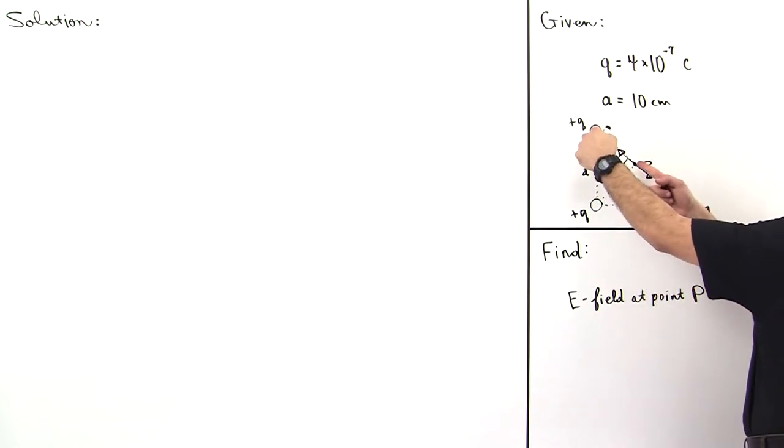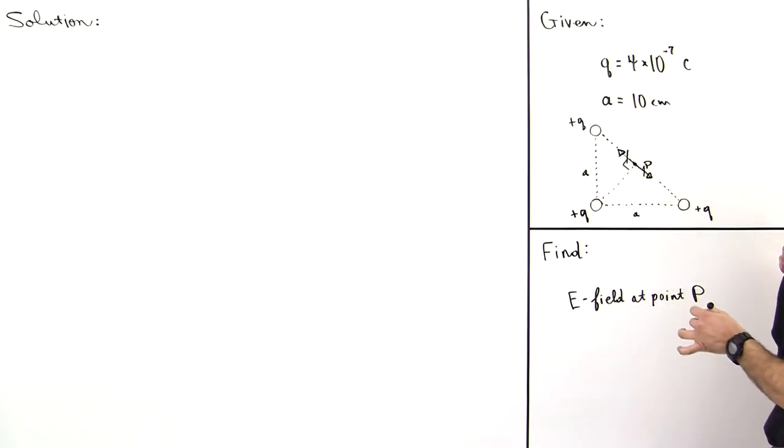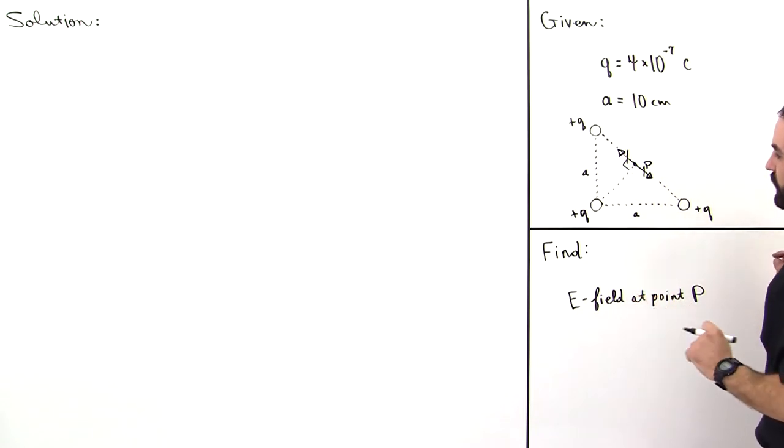So because this distance is the same as this distance, these guys are going to cancel and you'll see that show up frequently. You need to stay aware on your exam or on your homework of when you can use symmetry to just cancel components like that.